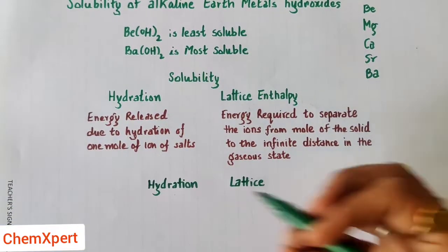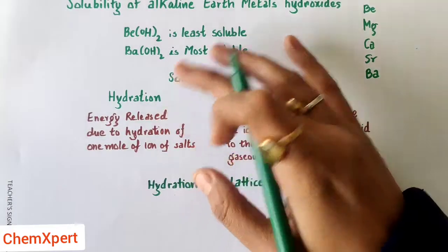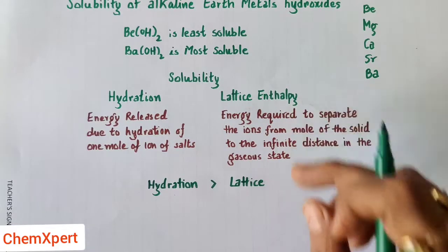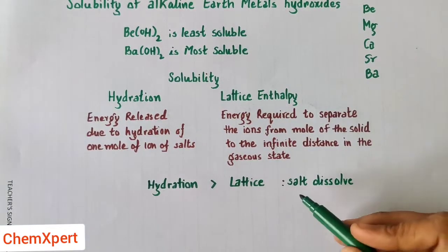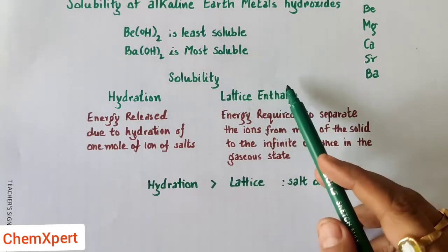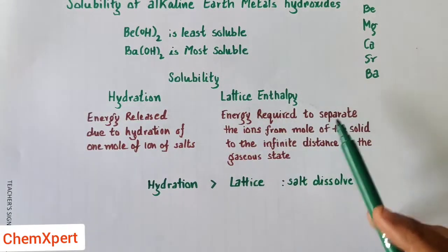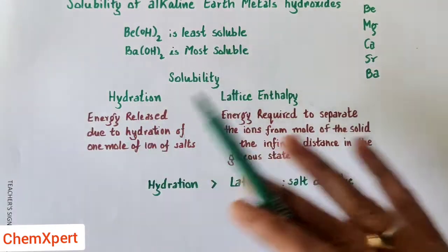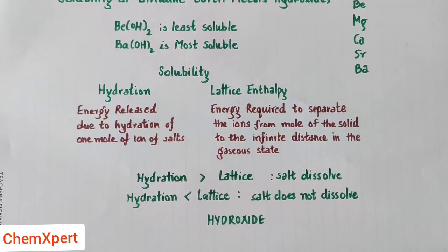If hydration energy is greater than lattice enthalpy, then the substance is said to be soluble — the salt dissolves. If the reverse happens, that is, a large amount of energy is required to separate the ions whereas very little energy is released during hydration, then that substance is said to be insoluble.